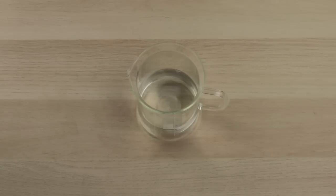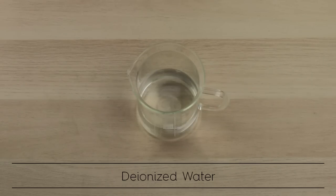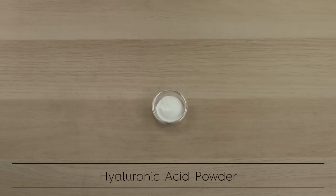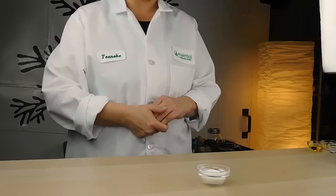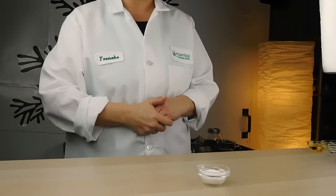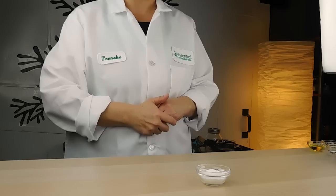To make hyaluronic acid serum, you'll need a few ingredients. You'll need deionized water, you'll need hyaluronic acid, and there are a few different forms of hyaluronic acid. You can check out our blog to read about the different forms of hyaluronic acid.